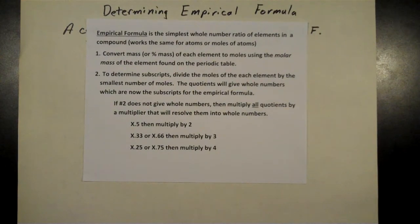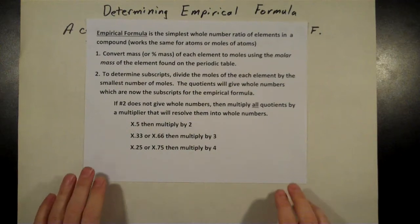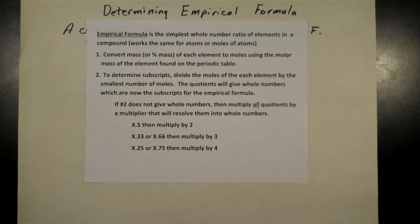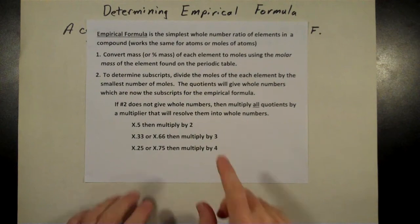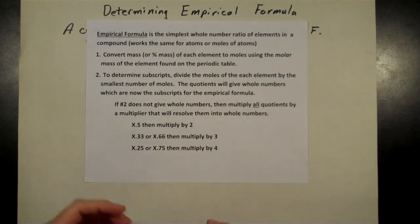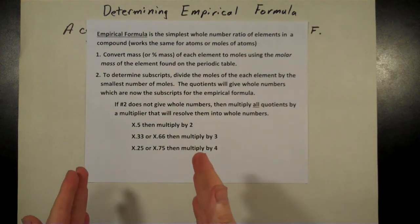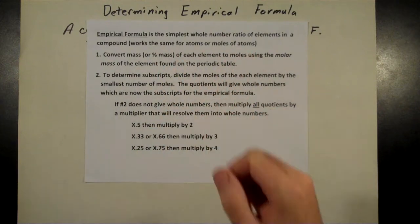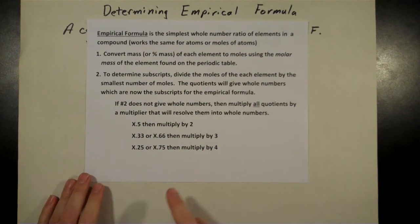Hi there, in this video we will be determining the empirical formula of a substance. I thought what we'd do here is start with what an empirical formula is. If you look right here, it says empirical formula is the simplest whole number ratio of elements in a compound. That can mean the ratio of atoms of each element or moles of atoms of each element, so it works for both of these.